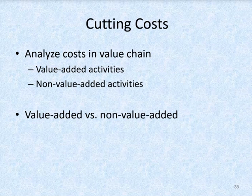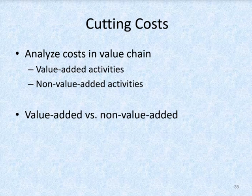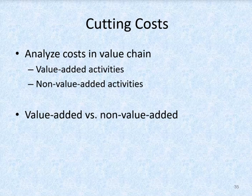Companies adopt ABC to get more accurate product costs for pricing and product mix decisions, but they often reap even greater benefits by using activity-based management to pinpoint opportunities to cut costs. Value-added activities are activities for which the customer is willing to pay because they add value to the final product or service — they help satisfy the customer's expectations. By identifying the company's activities and their related costs, managers can analyze whether all activities are truly necessary. Non-value-added activities, also referred to as waste activities, neither enhance the customer's image of the product or service nor provide a competitive advantage.